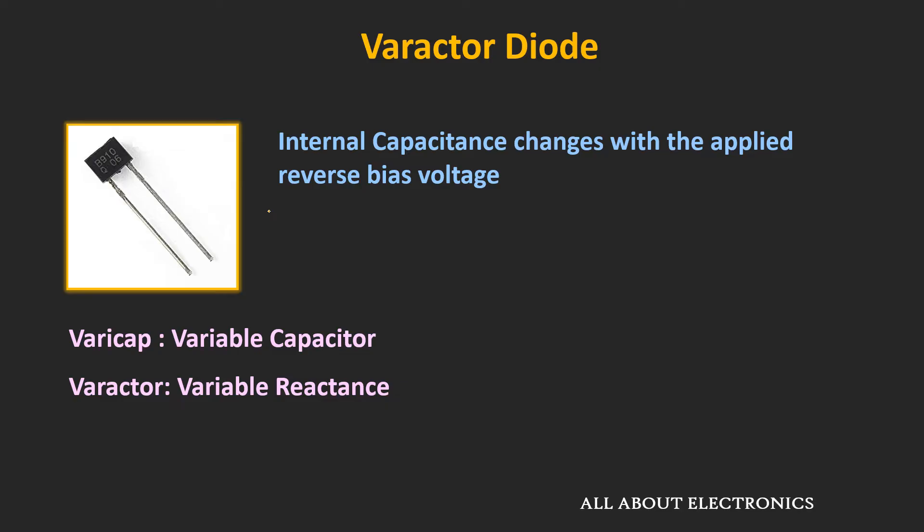In this diode, as we change the applied reverse bias voltage, its capacitance — or in other words, its reactance — will change. This property of the varactor diode is useful in many applications, particularly when we want to change the capacitance in the circuit using an externally applied voltage. Because of these properties, they are used in RF communication systems.